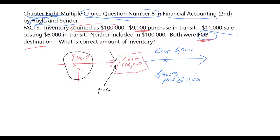So we have the same question here. Do we include this inventory in the $100,000 or do we not? Well, once again, it's FOB destination.